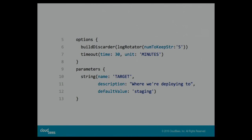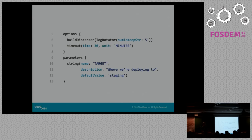Parameters are traditional job parameters, pulled into their own section to make it clearer than the scripted pipeline approach — string, boolean, and various other param types. One thing worth noting is that from Jenkins 2.17 onward, there's a params variable that uses the default value if you haven't already specified the parameters, so you don't have to run the build twice to avoid errors on the first run.